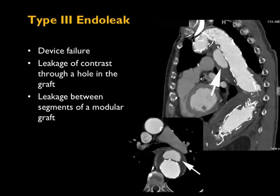Type 3 endoleak is more similar to type 1 than type 2. Like type 1, it's visible on arterial phase as a big blob of contrast — not a subtle lesion. This is caused by a hole in the graft — either accidentally created during placement, or from separation between segments of a multi-component graft such as an aorta plus two iliac limbs. These are very uncommon but occasionally you'll see one. This is a nice example from our teaching file showing a hole in the graft anteriorly with a blob of contrast filling up the aneurysm sac from the type 3 endoleak.